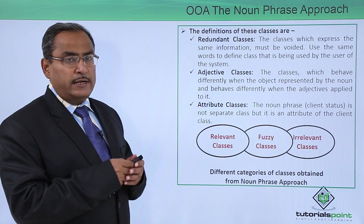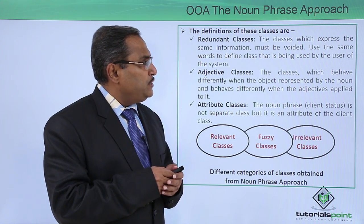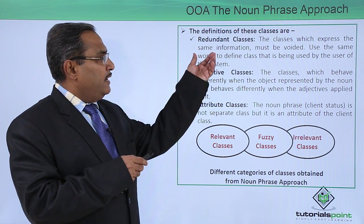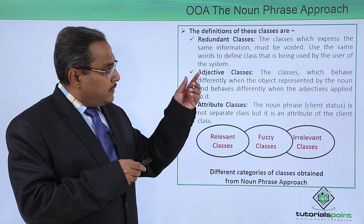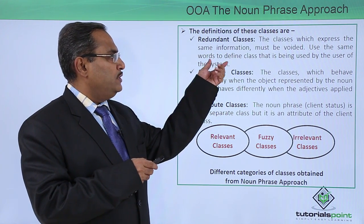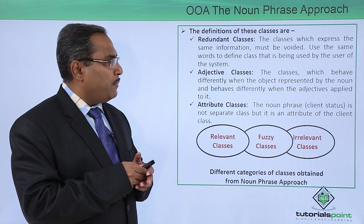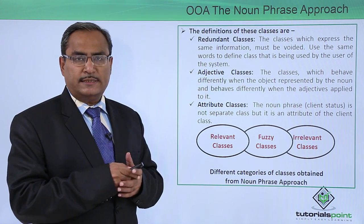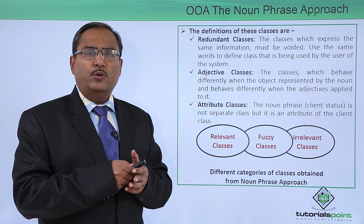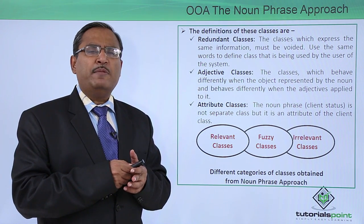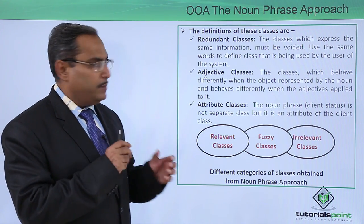In the case of redundant classes, classes which express the same information must be avoided. Use the same words to define a class as those used by the user of the system. Whenever you find classes that have the same kind of functionalities, those classes are to be eliminated.